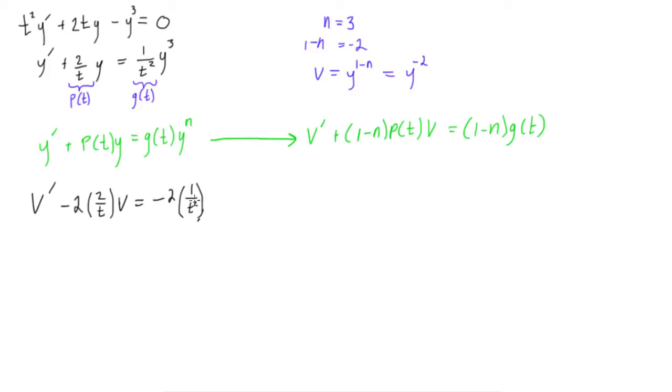But again, we're doing this the fast version. So, I'll write this one more time. v prime minus 4 over t times v is equal to minus 2 over t squared. Okay, so now we have a linear first order differential equation in terms of v. And we're going to look at this. Now this will become our p of t, and this stuff over here will become g of t. Now to solve this, we just use integrating factor method.